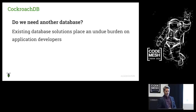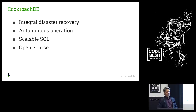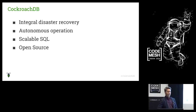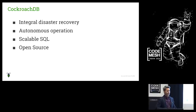CockroachDB is actually inspired by work done at Google on a system called Spanner — it's an open source version. It brings a synergy among all these capabilities. The most important, and obviously why we called it Cockroach, is that it's supposed to be hard to kill. Integral disaster recovery is a big part of this — not something you tack on later or spend a lot of time configuring. It is really the guts of the system.